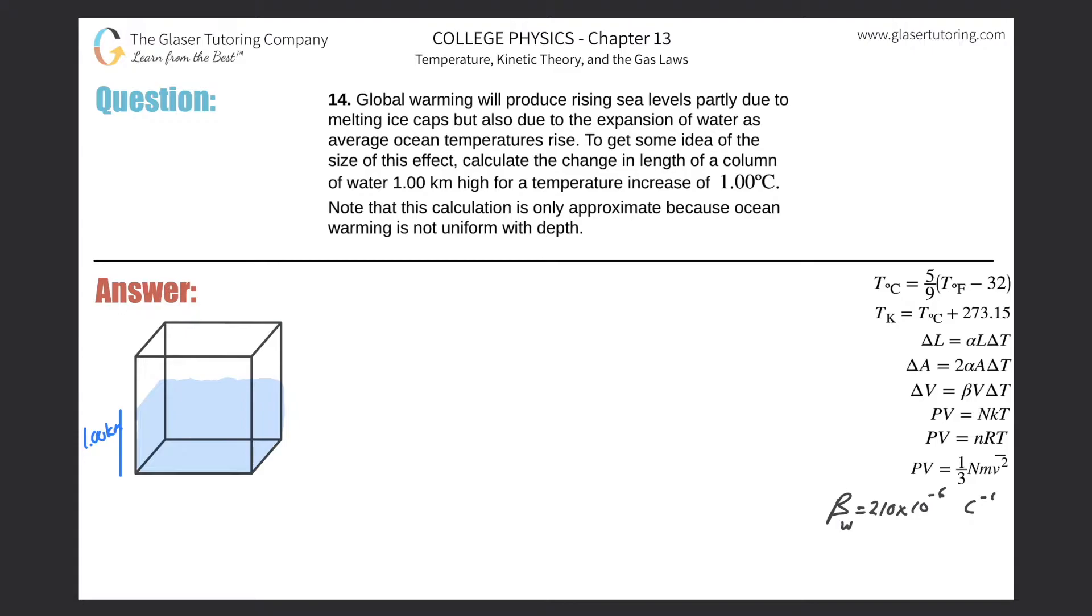Number 14, global warming will produce rising sea levels partly due to melting ice caps but also due to the expansion of water as average ocean temperatures rise. To get some idea of the size of this effect, calculate the change in length of a column of water one kilometer high for a temperature increase of one degree Celsius. Note that this calculation is only approximate because ocean warming is not uniform with depth.